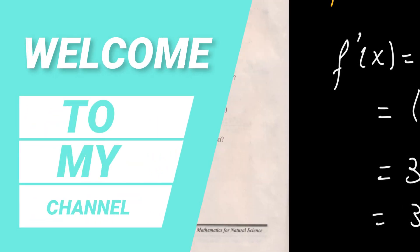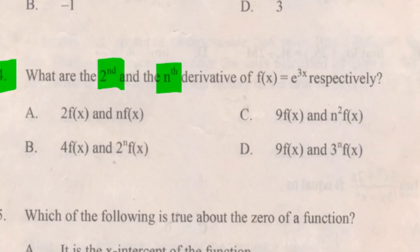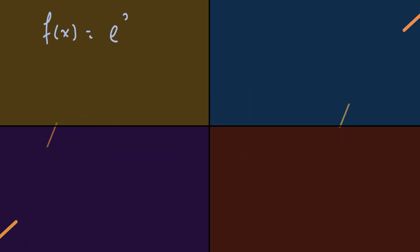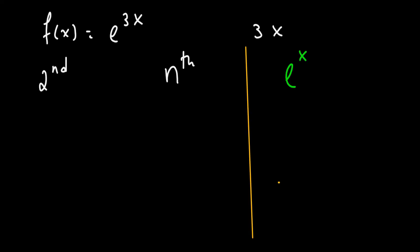Question number 44: what are the second and the nth derivative of f(x) = e^(3x)? We have to find the second and the nth derivative. The natural exponential function e^x has the special property that its derivative is also e^x — the derivative of e^x is always e^x.